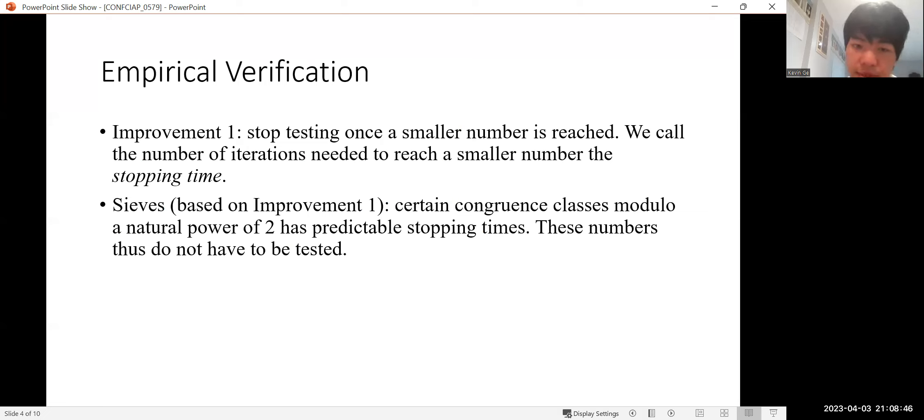Sieves is similar to Improvement 1 in that we stop testing. It's based on the idea that we can stop testing once the smaller numbers are reached. However, they're even better because we don't even have to test them because we know for some group of numbers, they must reach a smaller number within a finite number of time. And these numbers, we just don't have to test.